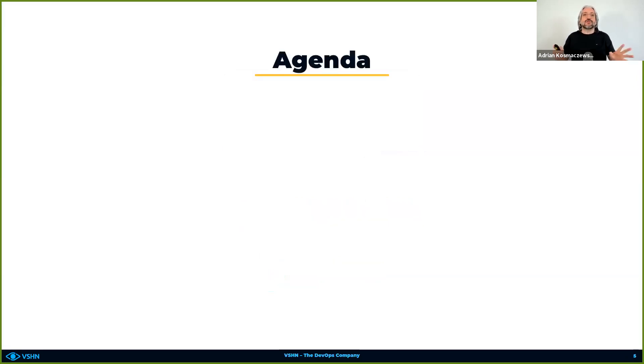Today we're going to talk about Rancher extensively. We also have our own products — briefly mentioning Apuyo, a platform as a service in Switzerland provided together with a company called Puzzle in Bern. We offer two big open source projects for the Kubernetes world called Project Syn and KTOP. Please check them out on vision.ch. But enough about Vision.